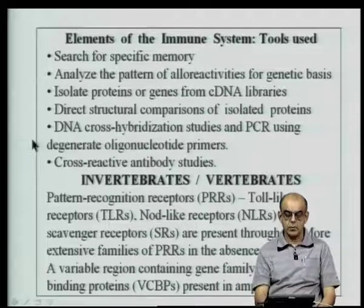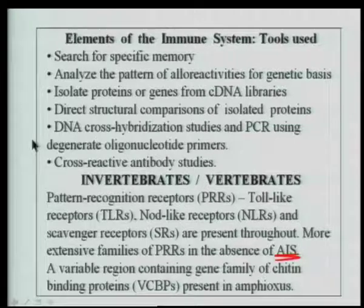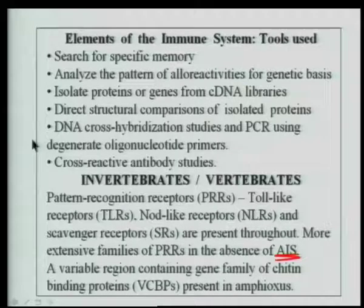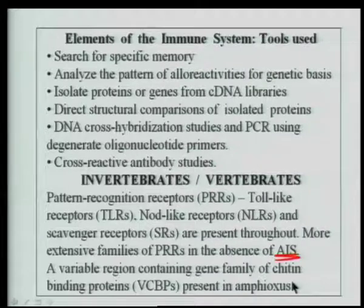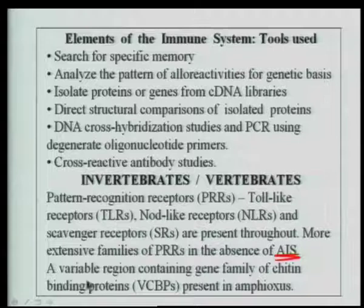There are also NOD-like receptors and scavenger receptors present early in evolution, well dispersed across the animal kingdom. Early on, there is also an equivalent to the variable region of the immunoglobulin molecule called the VCB piece — the variable region containing gene family of chitin binding proteins. Since many cells are invaded by pathogens rich in chitin, they have evolved a kind of protein immune system incorporating the phenomenon of variability. This VCB gene family is present in amphioxus.